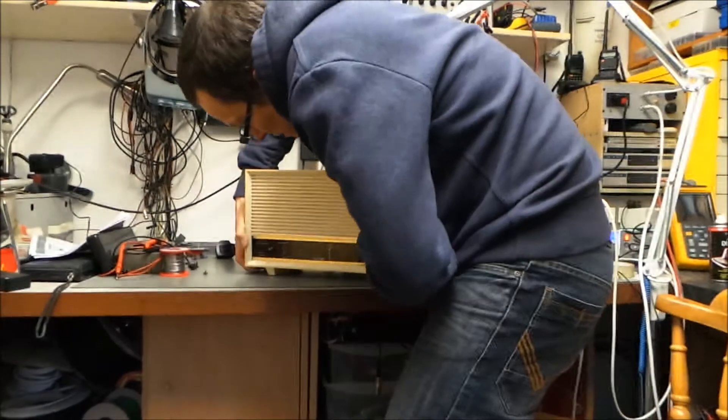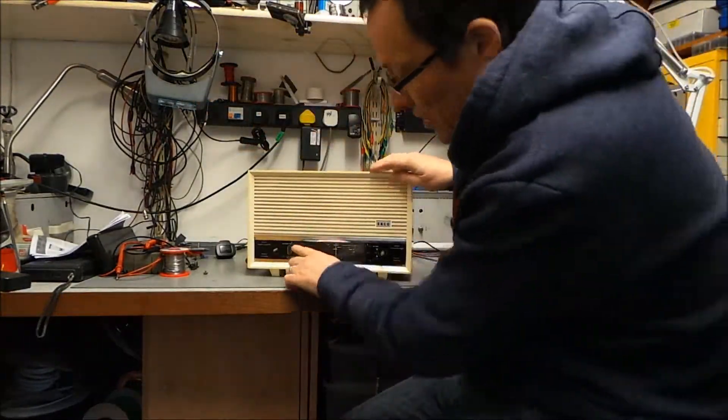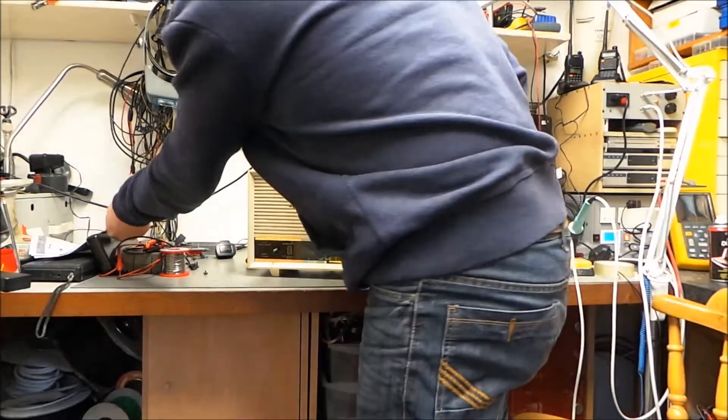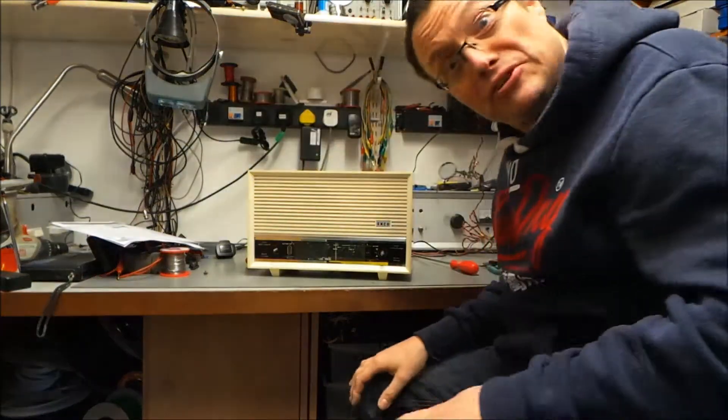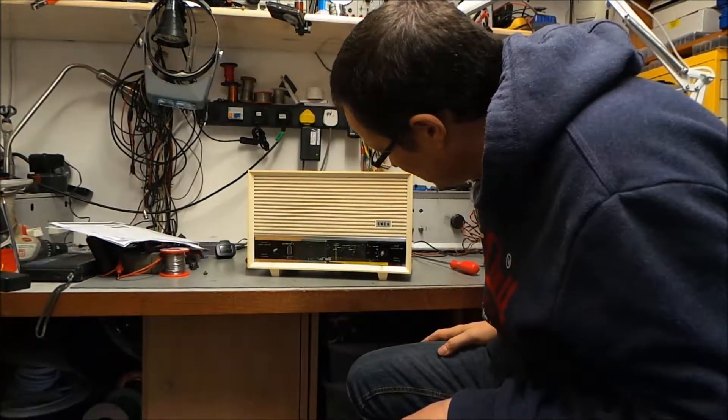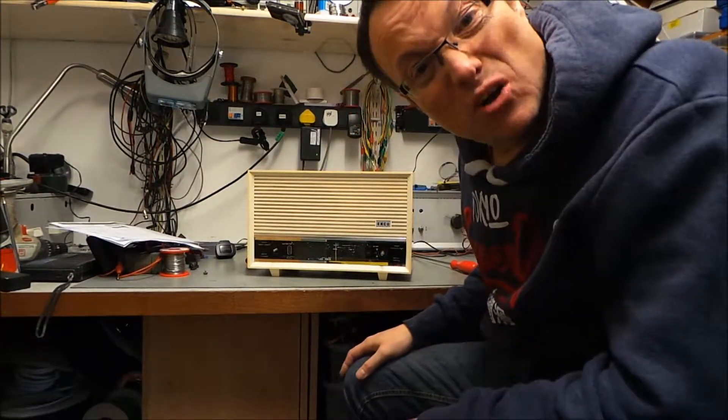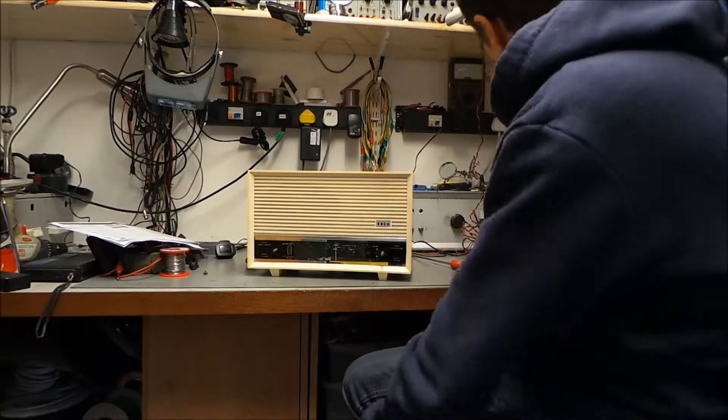It's got one of those, looks like an exclamation mark, sits behind there and it's a DM 70 tuning indicator. A bit of a white elephant really, obviously in vogue at the time. So there we go.